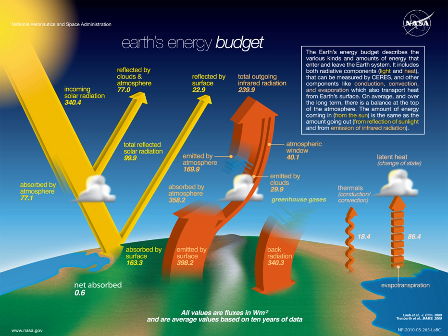Earth's energy budget accounts for the balance between the energy Earth receives from the Sun, and the energy Earth radiates back into outer space after having been distributed throughout the five components of Earth's climate system, having thus powered the so-called Earth's heat engine. This system is made up of Earth's water, ice, atmosphere, rocky crust, and all living things. Quantifying changes in these amounts is required to accurately model the Earth's climate.